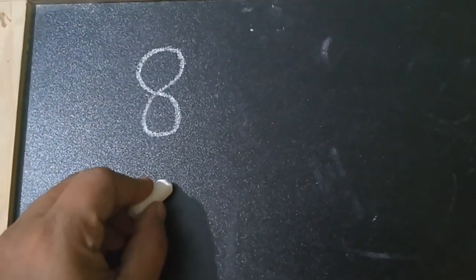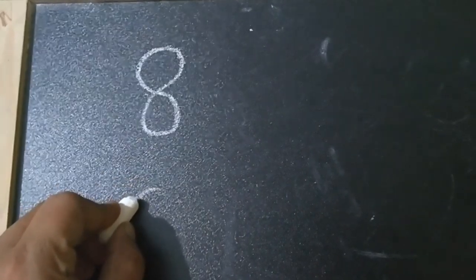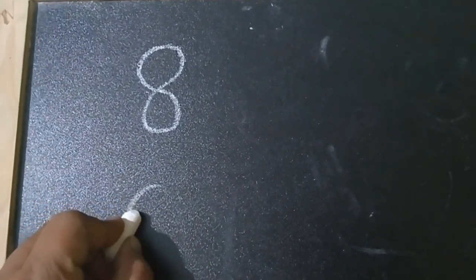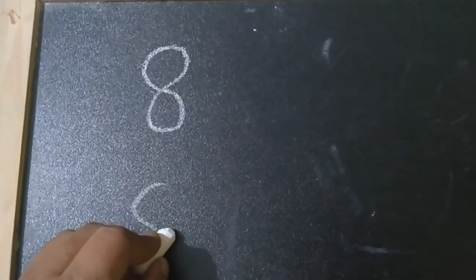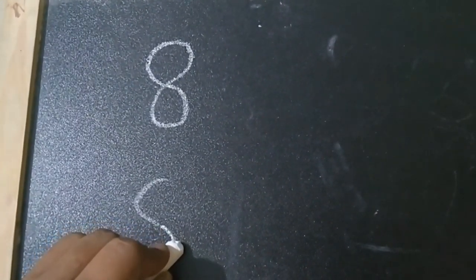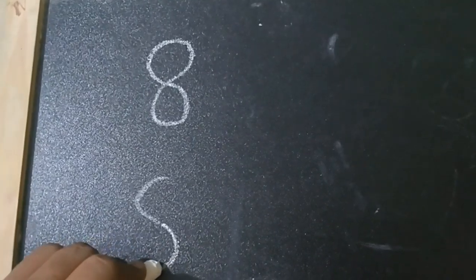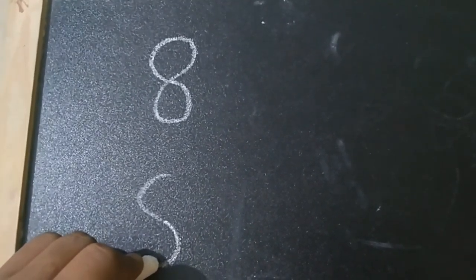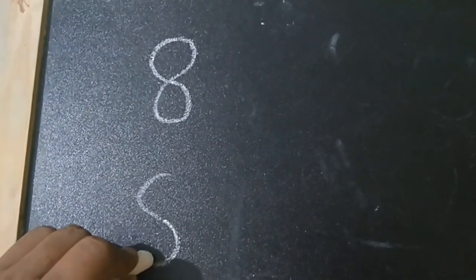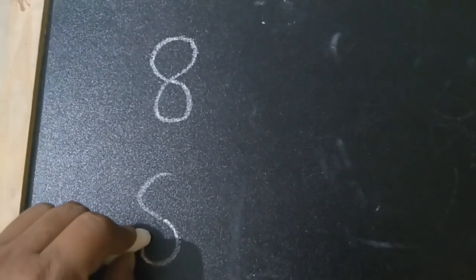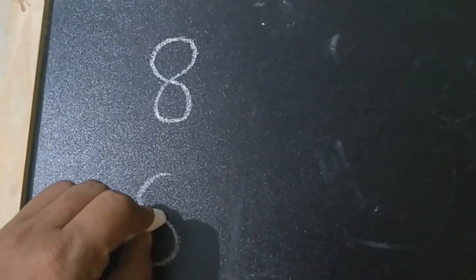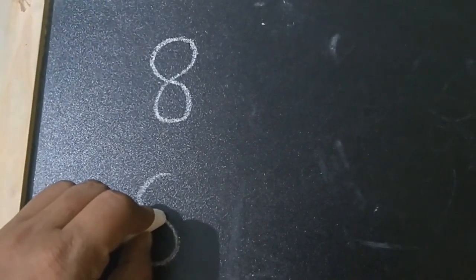Again make a backward curve, come down, make a forward curve, turn, go up making a curve, cross and make a curve and join.